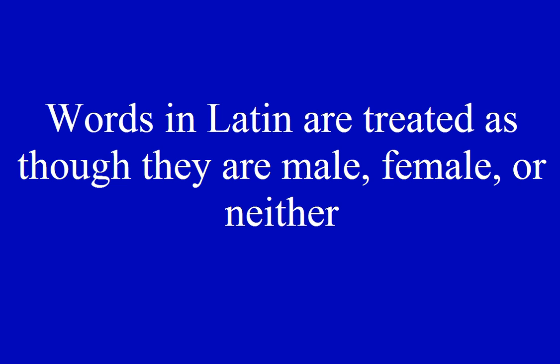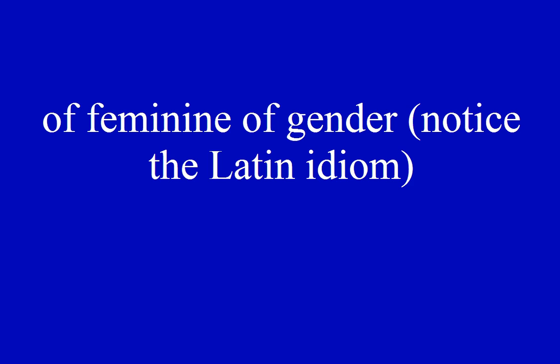Grammar point: words in Latin are treated as though they are male, female, or neither male nor female. This is called gender. A pen — penna. Feminini generis: penna — of feminine gender. Notice the Latin idiom; I will be using this in translation from time to time until we just anglicize it.